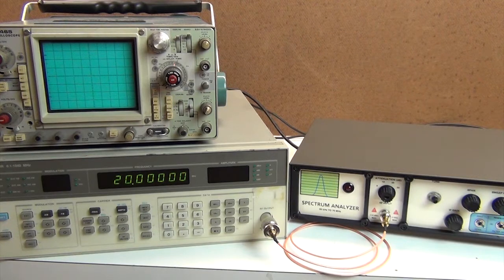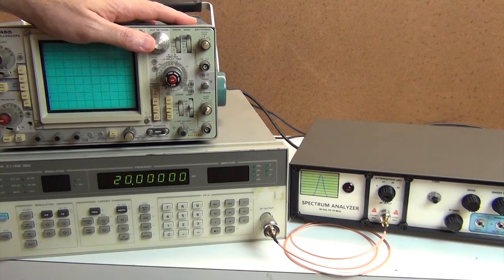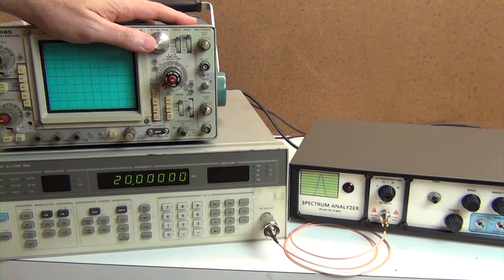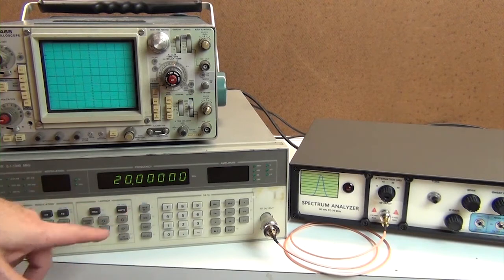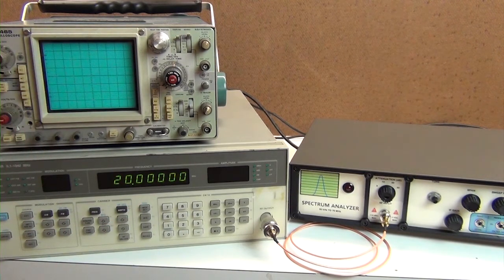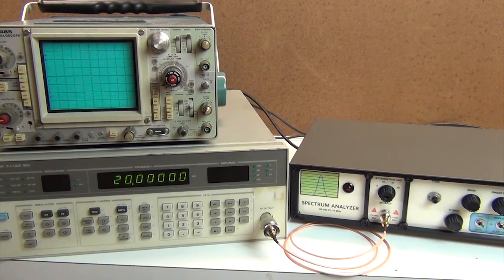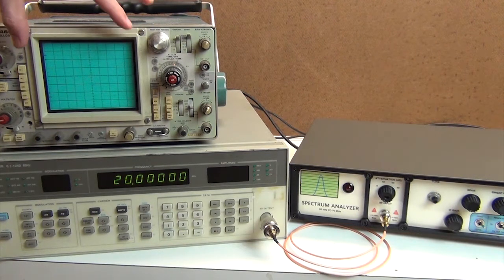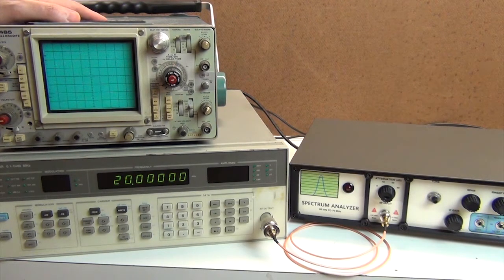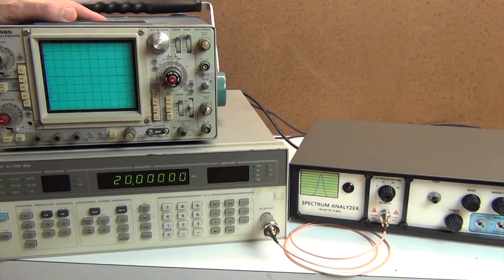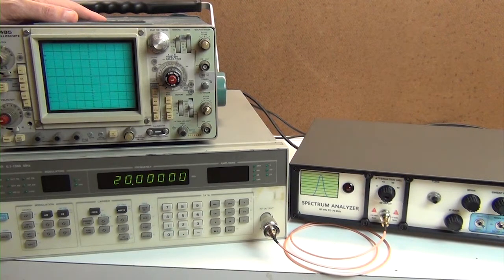I put the spectrum analyzer back together and I've got it set up with my function generator and my trusty oscilloscope. And what I'm going to do is repeat the experiment I did at the beginning of the video. I'm going to output a 20 megahertz signal from the function generator and adjust the level of the signal and then see the response on the oscilloscope. And also see the effect on the noise floor when I adjust the IF gain on the spectrum analyzer.